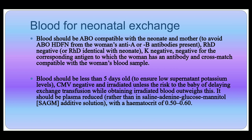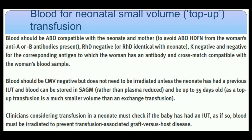Blood for neonatal exchange transfusion should be ABO-compatible with the neonate and mother, RhD-negative, K-negative, negative for the corresponding antigen to the maternal antibody, and cross-match compatible with the mother's blood. The blood sample should be less than five days old to ensure low supernatant potassium, CMV-negative, and irradiated unless the risk to the baby from delaying exchange transfusion outweighs this. It should also be plasma-reduced rather than saline-adenine-glucose-mannitol (SAGM) additive solution, with a hematocrit of 0.5–0.6. For neonatal small-volume top-up transfusion, blood should be ABO-compatible with the neonate and mother, CMV-negative, and irradiated. Clinicians must check if the baby has had a prior intrauterine transfusion.